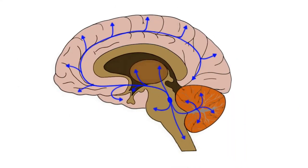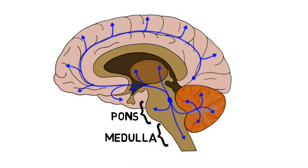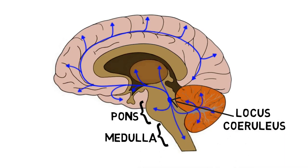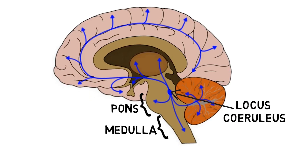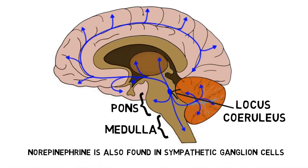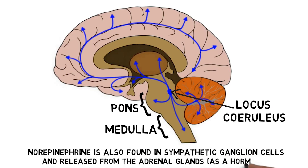Norepinephrine-producing neurons in the central nervous system are primarily concentrated in the pons and medulla. The most prominent of these groups of neurons is a nucleus called the locus coeruleus, which is the main site of norepinephrine production for the central nervous system. Norepinephrine is also the primary neurotransmitter used by the sympathetic nervous system, and is found in clusters of sympathetic neurons located near the spinal cord known as sympathetic ganglia. It is also released from the adrenal glands as a hormone.